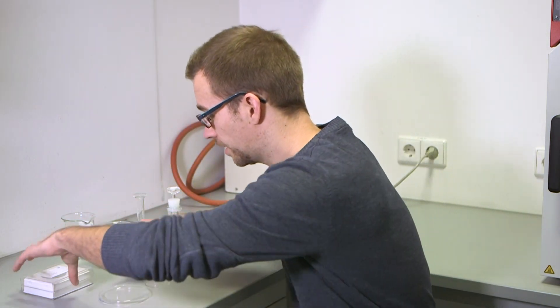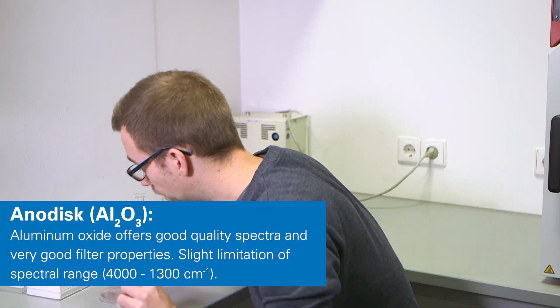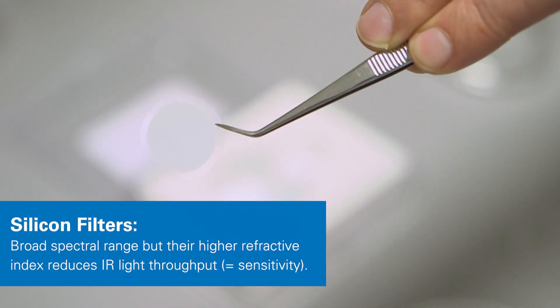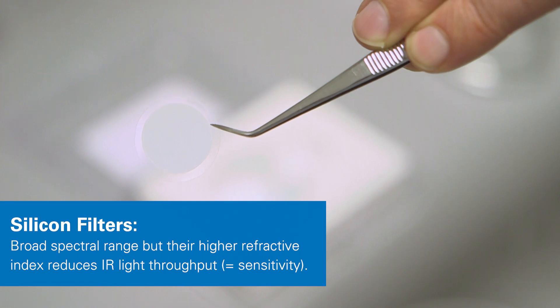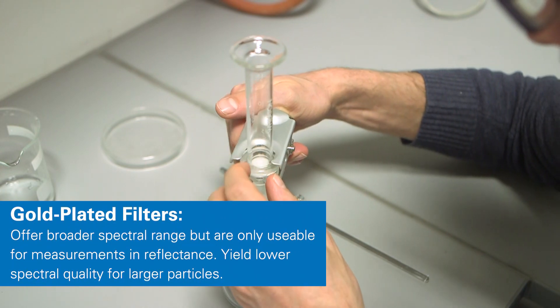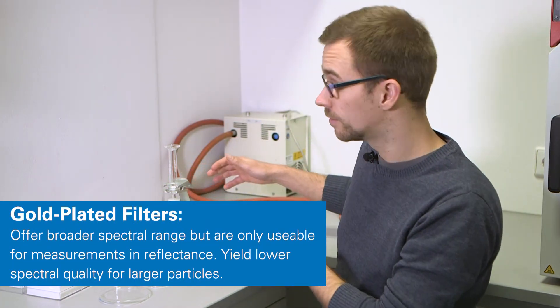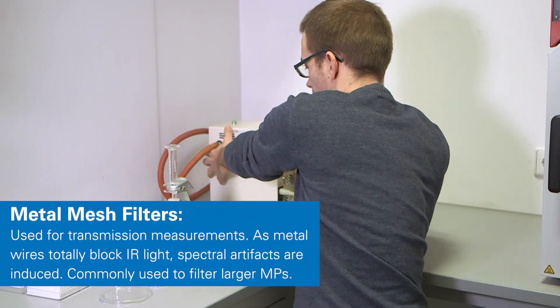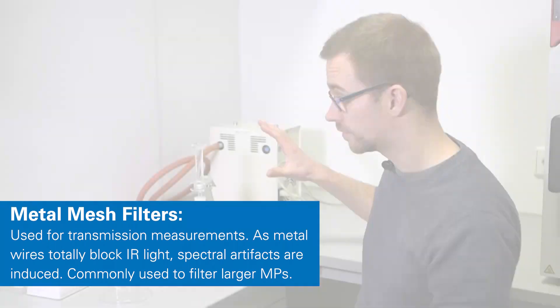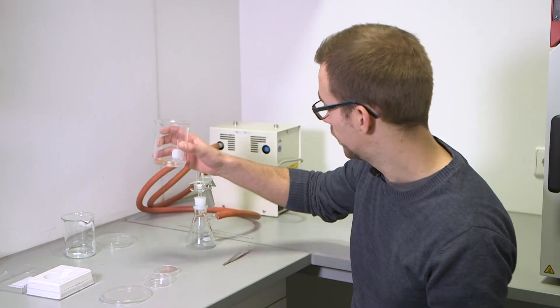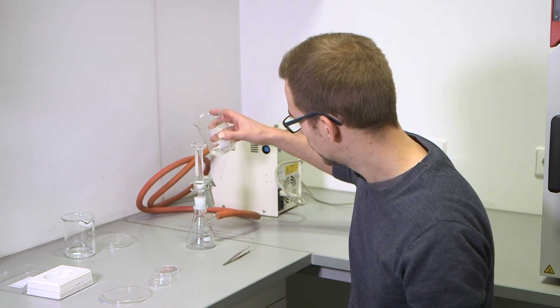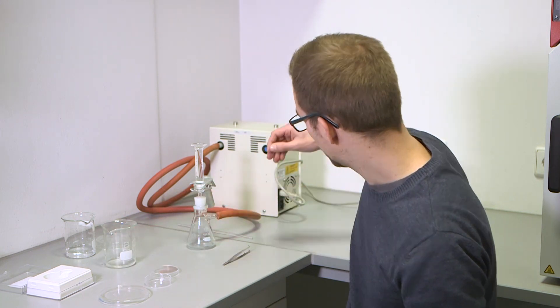So to prepare it, we're going to take an anodisc filter, place it on top of the glass membrane, put the cylinder on top, secure it with this clamp and for easier filtration we're going to use this vacuum pump. So now that everything is set up, we're going to fill in our sample and turn on the pump.